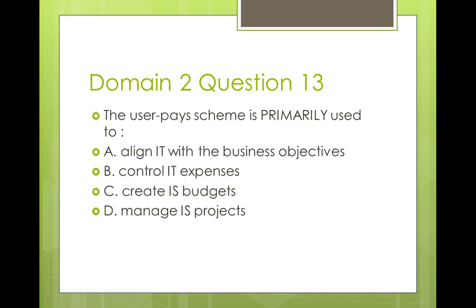Question thirteen: the user pay scheme is primarily used to A) align IT with the business objective, B) control IT expenses, C) create IT budgets, D) manage IT projects. The best answer is B — control IT expenses. Users are charged based on how they consume IT services. Because users know they will be charged, they don't make spurious demands on IT. Best answer is B.